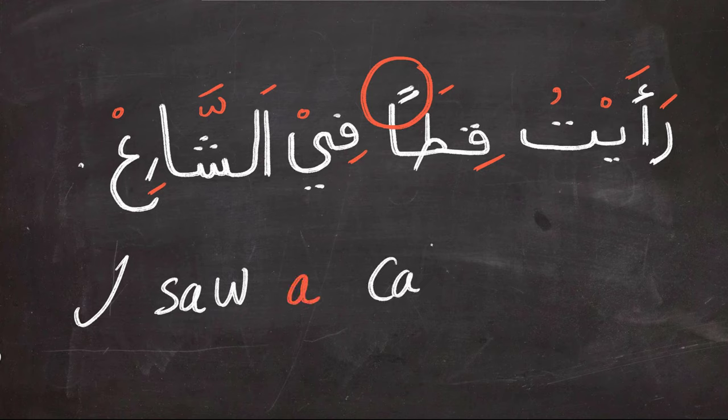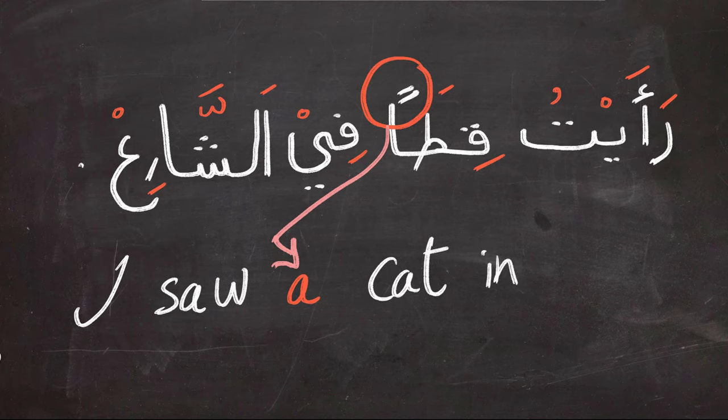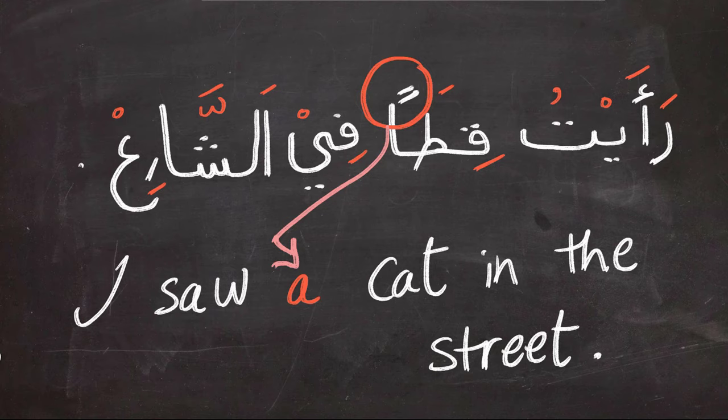رأيت قطن في الشارع. As you can see, the Tanween of قطن, which means a cat, can be seen in the translation. I saw, رأيت قطن, translates to 'a cat'. في الشارع means 'in the street'.